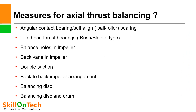Let us know what are the measures for axial thrust balancing in pumps and compressors. These include: angular contact bearings, self-aligning ball or roller bearings, tilted pad thrust bearings, bush and sleeve type bearings, and balance holes in impellers.